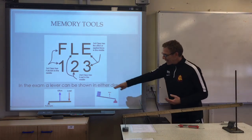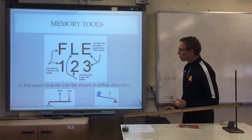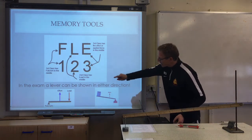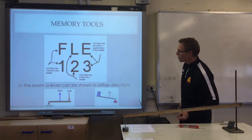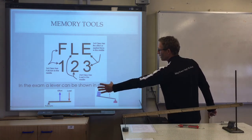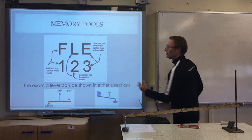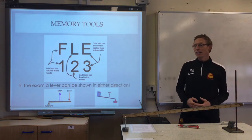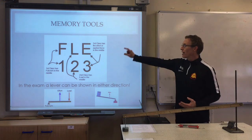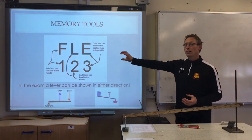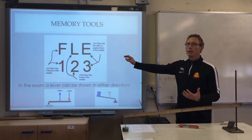In the exam, the exam board can show you the levers in either direction. What I've shown here are two third class levers but opposite ways round. The exam won't always put them in the way you've learnt them — it can be the other way around. So F, L, E — one, two, three is a good way of remembering which one is in the middle for that lever.